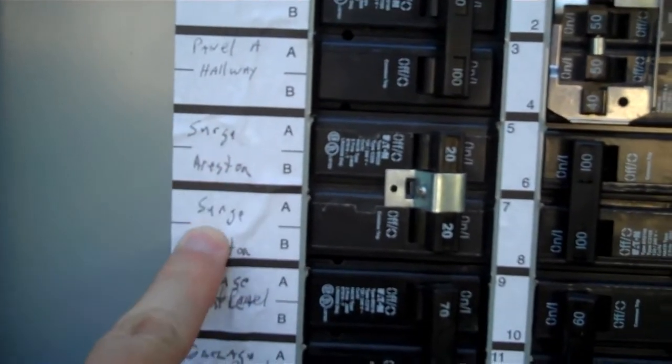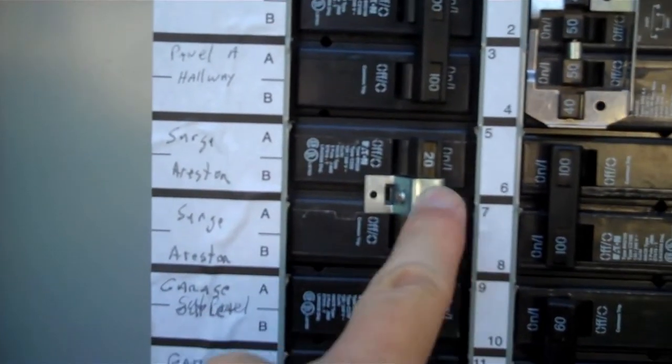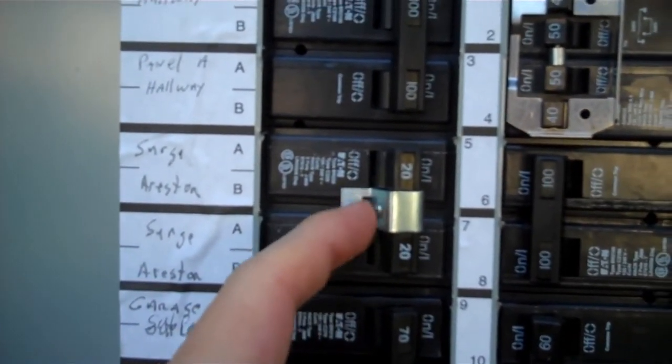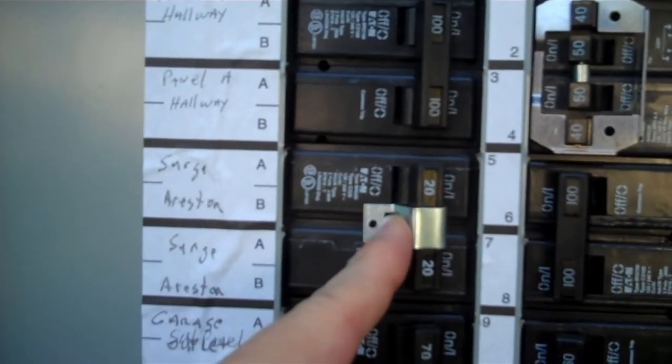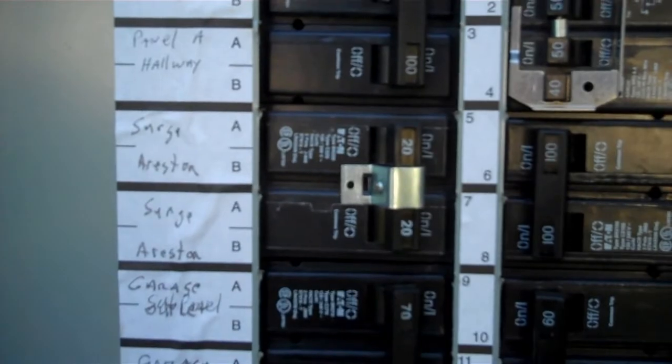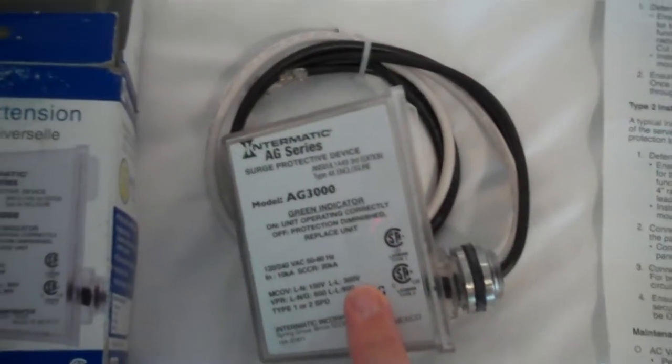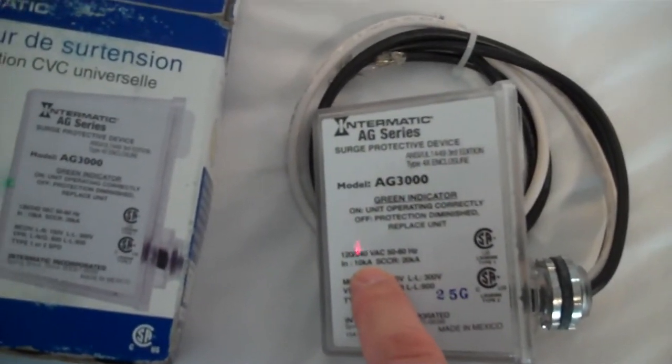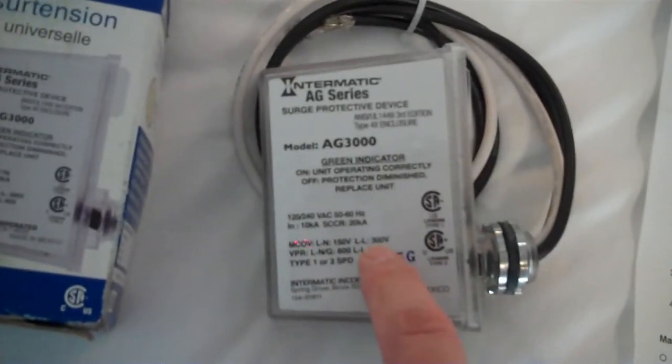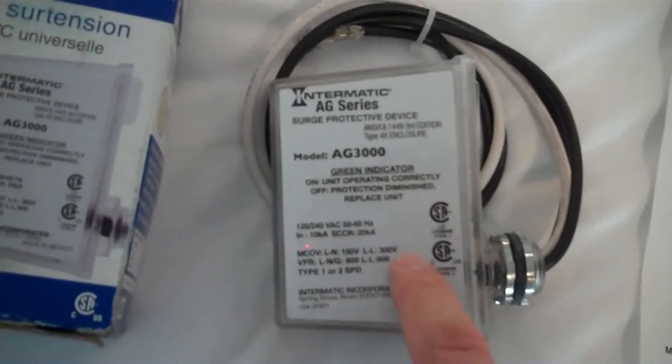So it's tied into my panel here on this surge arrestor, 20 amp, and you see they have a lockout tag here that basically will keep this guy turned on all the time. I used the model number to buy a direct replacement. You could have upgraded to something with a higher capacity, so this is 10 kiloamps. It is 300 volts line to line.